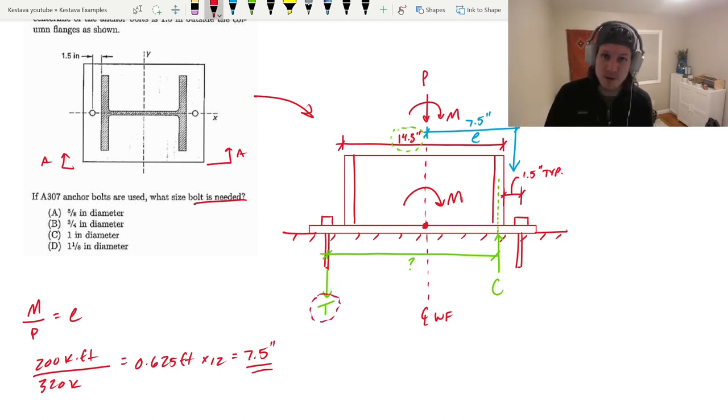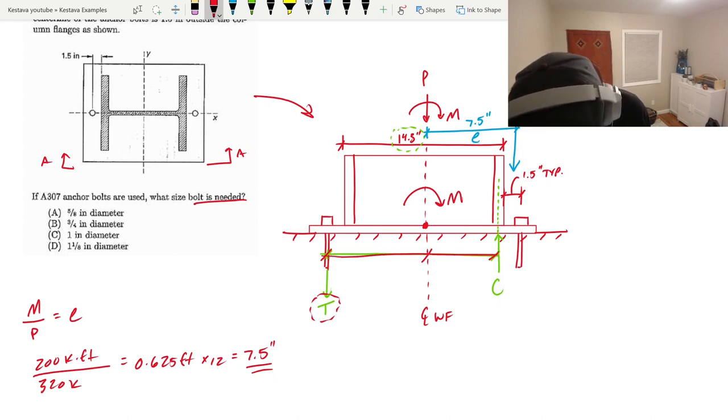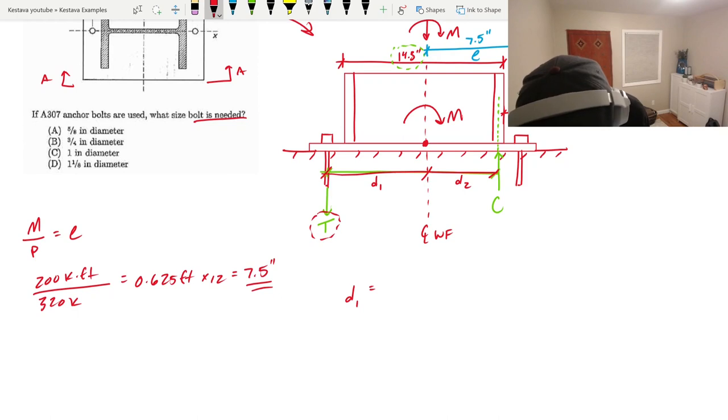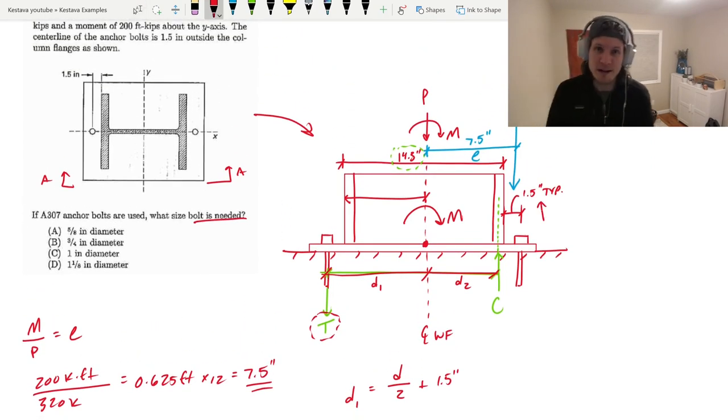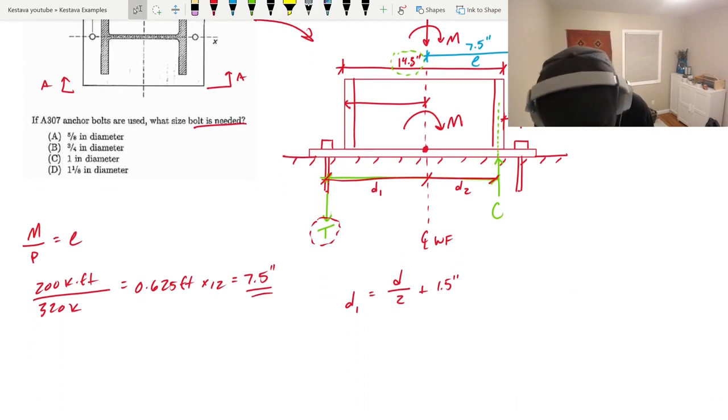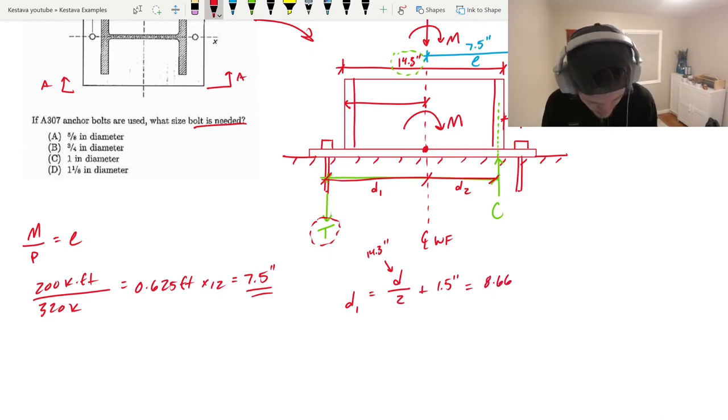We can look about point A, about the centerline, because we need to find that resultant force T. We can split up this distance into two separate distances. Let's call it D1 and D2. D1 is just going to equal D, which is the depth of our column over 2, plus 1.5 inches, because we know it's typical 1.5 inches from the outside face of the column flange to the anchor pole. D1 equals 8.66 inches.